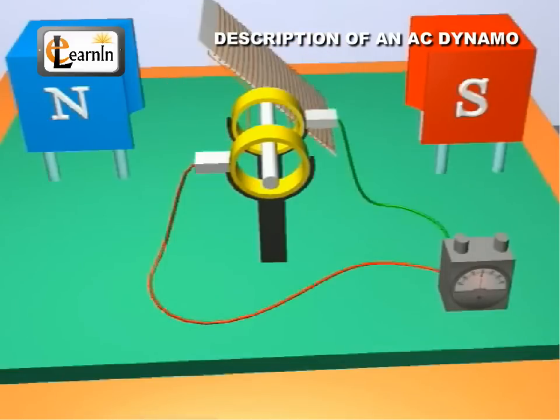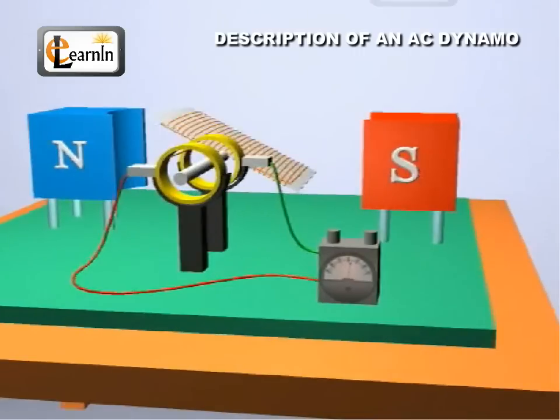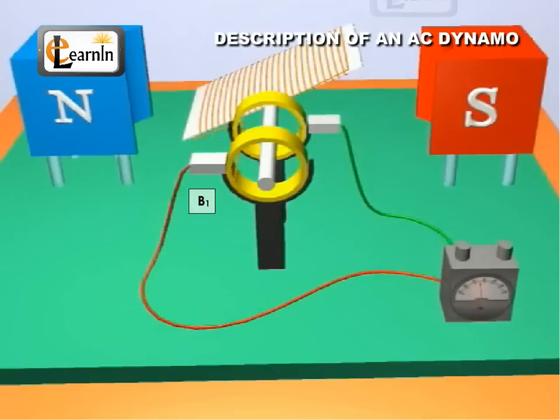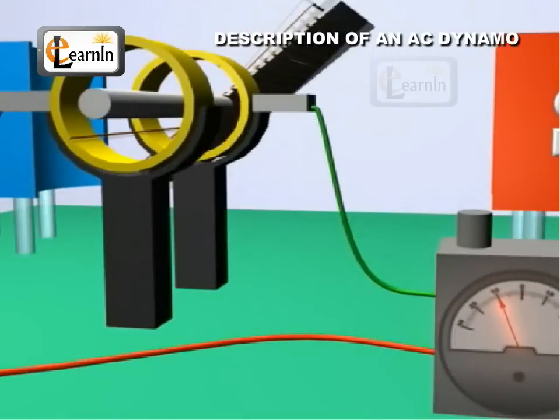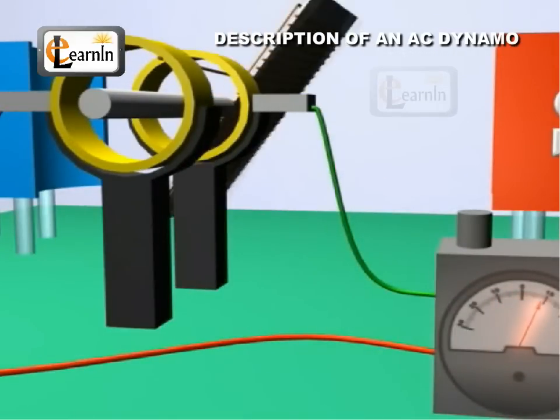The two carbon brushes B1 and B2 are always in contact with the slip rings S1 and S2 respectively. The other two ends of B1 and B2 are connected to an external circuit containing load resistance R.